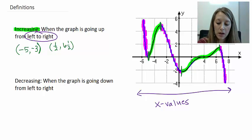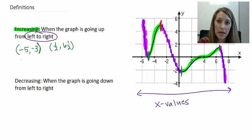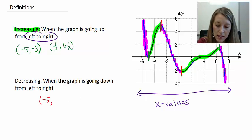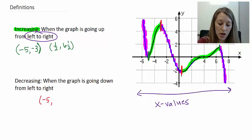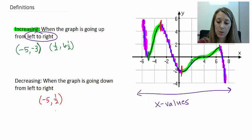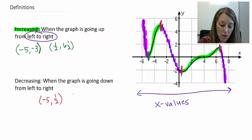Now let's talk about the decreasing intervals. The middle decreasing interval starts at the same place where the first increasing ended — at negative 3 — and ends at the same place where the second increasing started, somewhere close to one half. So that's the easy middle one.